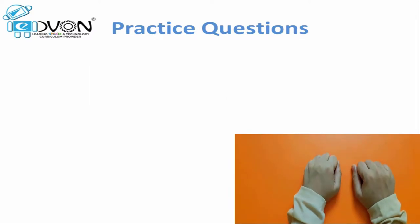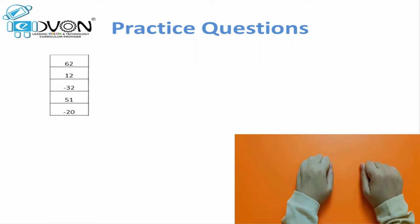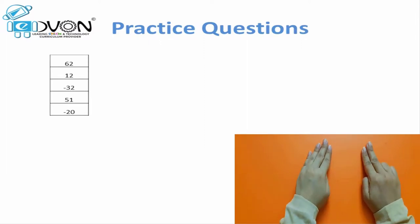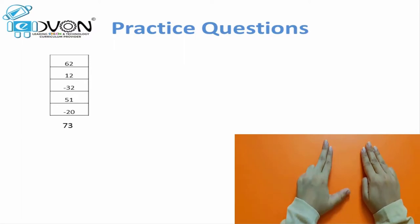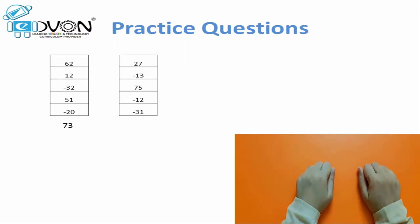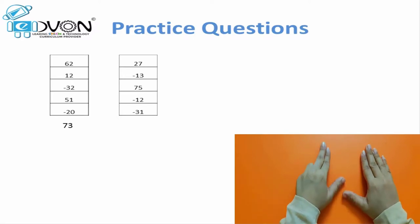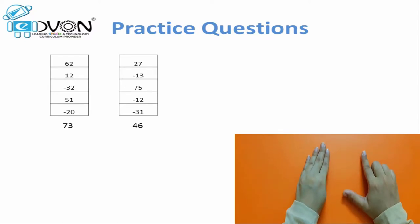Let's practice for different values on fingers. First question: 62, plus 12, minus 32, plus 51, minus 20 — answer 73. Next question: 27, minus 13, plus 75, minus 12, minus 31 — answer 46.